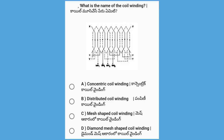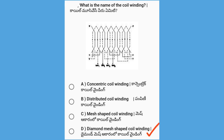Next, what is the name of the coil winding shown in the diagram? The options are Concentric Coil Winding, Distributed Coil Winding, V-shaped Coil Winding, and Diamond V-shaped Coil Winding. The answer is Diamond V-shaped Coil Winding.